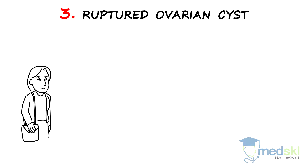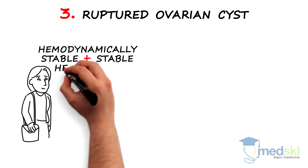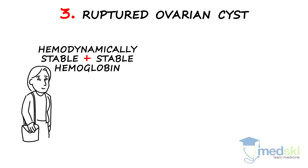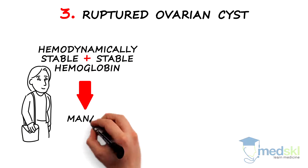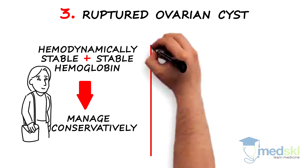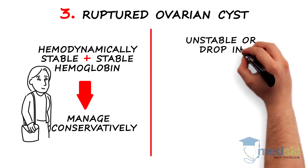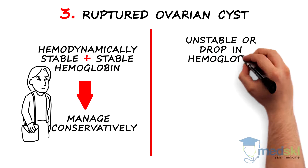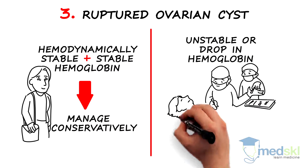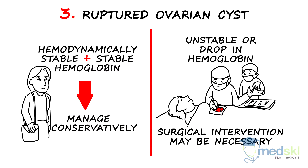If the patient is hemodynamically stable with a stable hemoglobin, she can be managed conservatively without surgical follow-up. If she is unstable or continues to have a drop in hemoglobin, surgical intervention may be necessary.